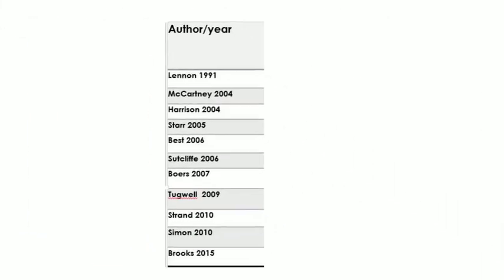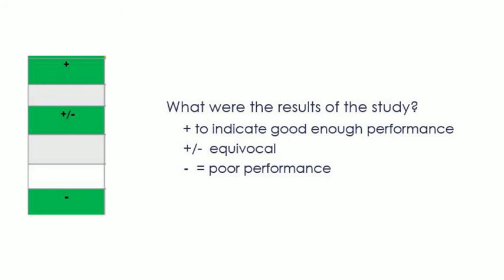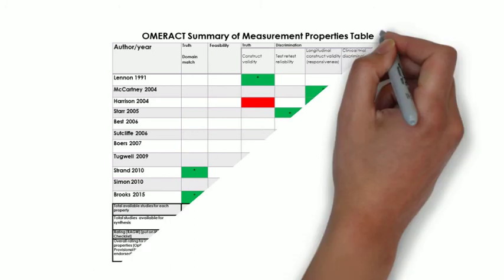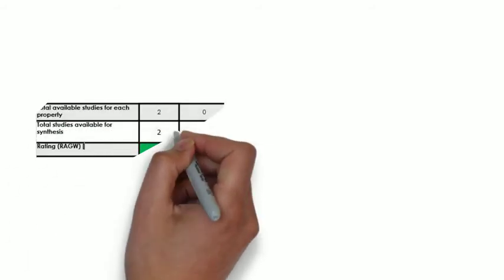This table provides a visual summary of the studies that have been found, the measurement properties that have been assessed, the results of the appraisal of the study quality as shown by a green, amber, or red color, and the adequacy of the results of each study. This summary table is referred to by its acronym SOMP. Each instrument that is assessed will have its own SOMP table to summarize the evidence that has been found.